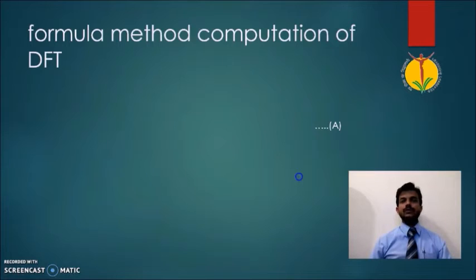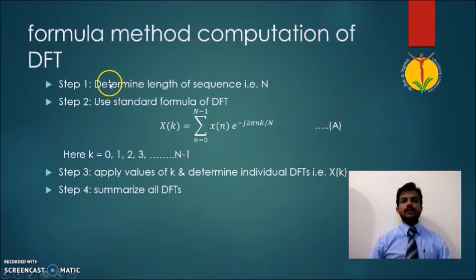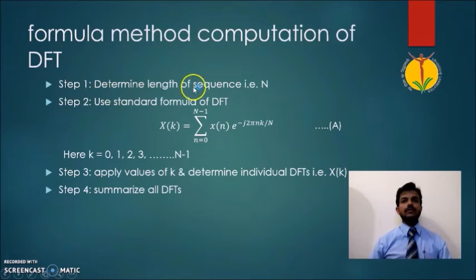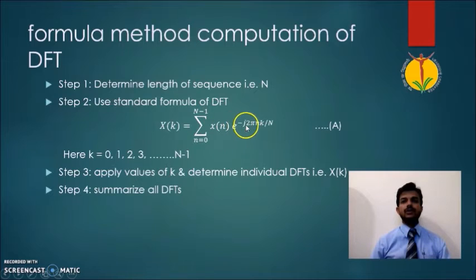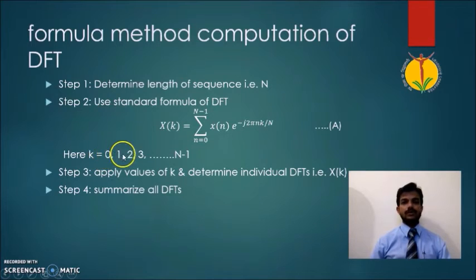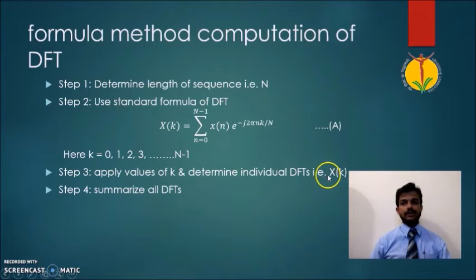Now let us look at the standard formula method for calculating the DFT. The steps are: first, determine the sequence length N. Second, use the standard DFT formula X(k) = summation from n=0 to N-1 of X(n) e^(-j2πnk/N), where k ranges from 0 to N-1. Third, apply different values of k to determine the individual DFT values X(k). Finally, summarize all the DFT values.